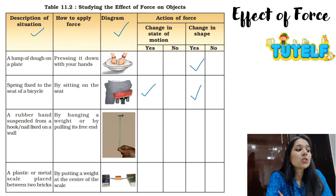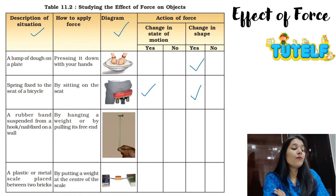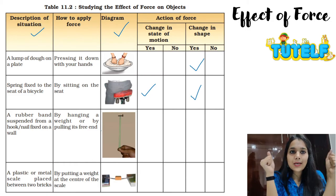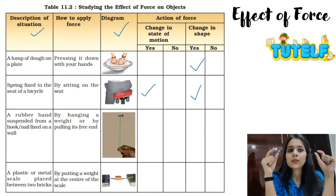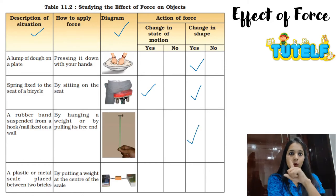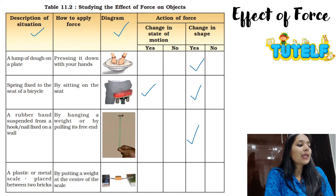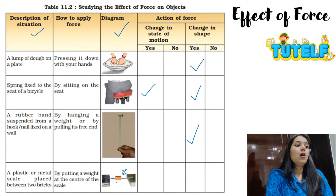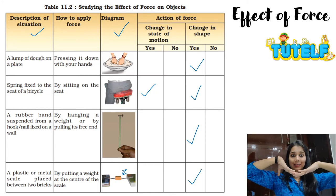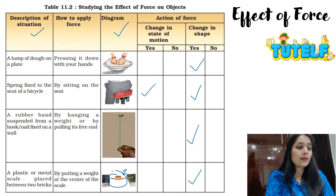Next: a rubber band suspended from a hook on a wall, with force applied by hanging a weight or pulling its free end. As I mentioned, when you stretch a rubber band, because of the elasticity of the solid there will be an expansion — so there will be a change in the shape. Last case: a plastic or metal scale placed between two bricks, with a weight put at the center. The scale will bend, so there is a change in shape — earlier it was flat, but with the weight it bends slightly as seen in the image.